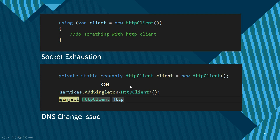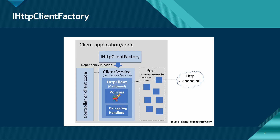The singleton approach is where you create a static variable or singleton instance of your HttpClient and inject that client into your components. But if someone changes the DNS name of your API, there's no way for your client to know that the DNS has changed, because it gets initialized when you start your application. So you can't really use either of these approaches — and that's the reason why .NET released HttpClientFactory.